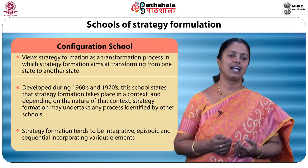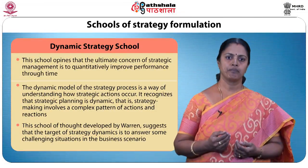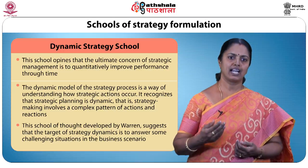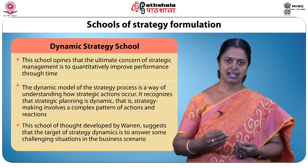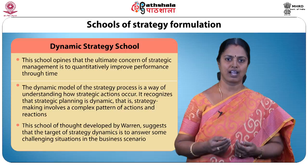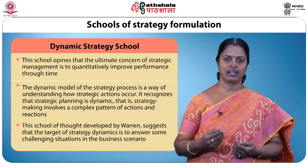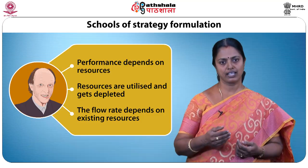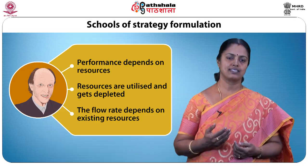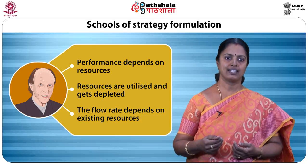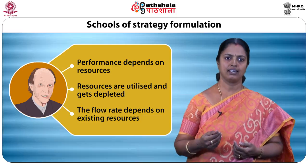Warren's dynamic strategy school opines that the ultimate concern of strategic management is to quantitatively improve performance through time. The dynamic model of strategic process helps understand how strategic actions occur, recognizing that strategic planning is dynamic and involves a complex pattern of actions and reactions. According to Warren, there are three principles in strategic dynamics: performance depends on resources, resources are utilized and get depleted, and flow rate depends on existing resources. When combined, these create an integrated strategy suitable for a dynamic environment.